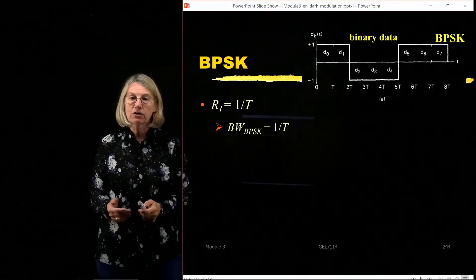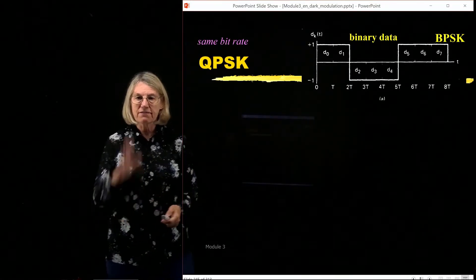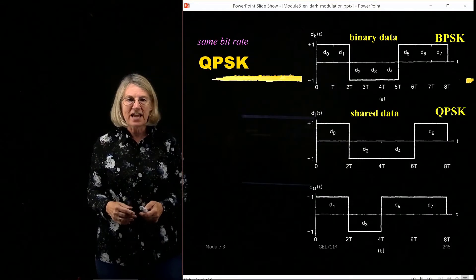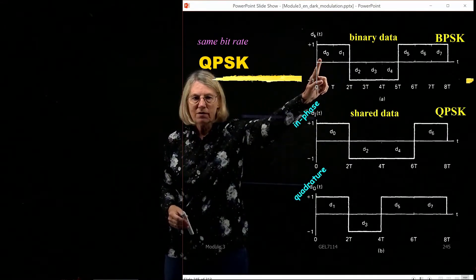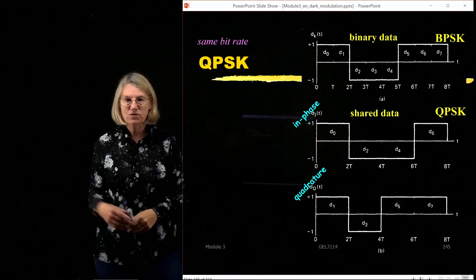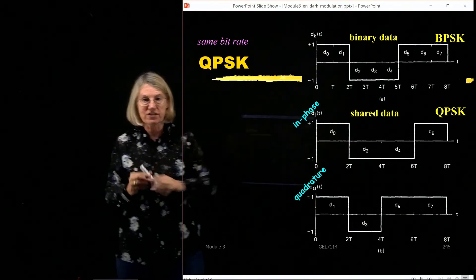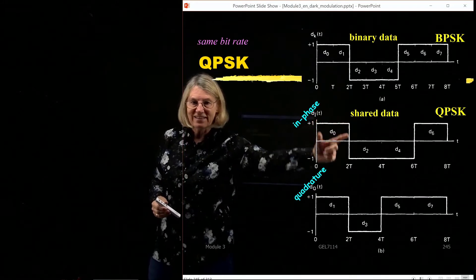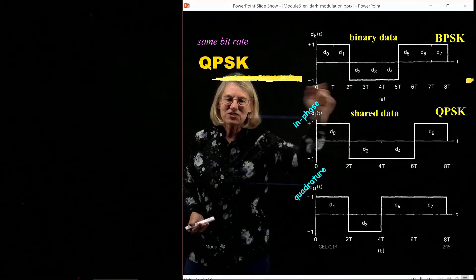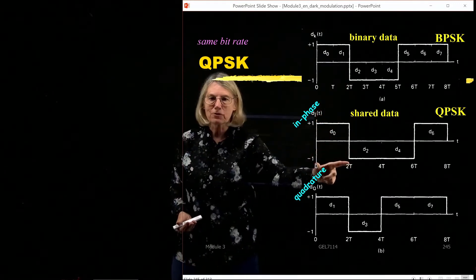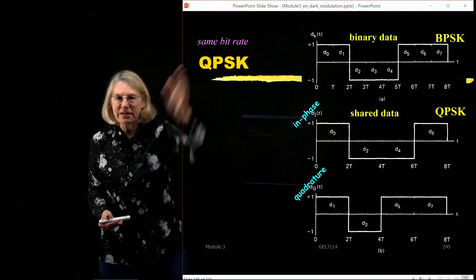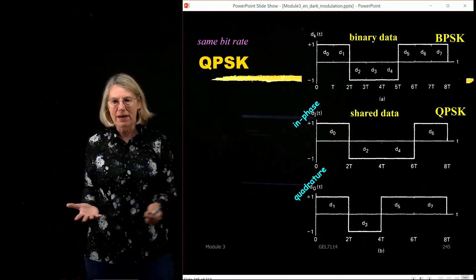Now what happens if I go to QPSK? To understand QPSK, first I'm going to fix the bit rate - it's the exact same data I'm sending. In this case I'm going to send D0 in the in-phase and D1 in the quadrature. So I have two coefficients and I'm going to send the first bit in what becomes a symbol interval. What was two bit intervals becomes one symbol interval, and in that symbol interval I send an in-phase and a quadrature bit. The same bit rate is maintained.